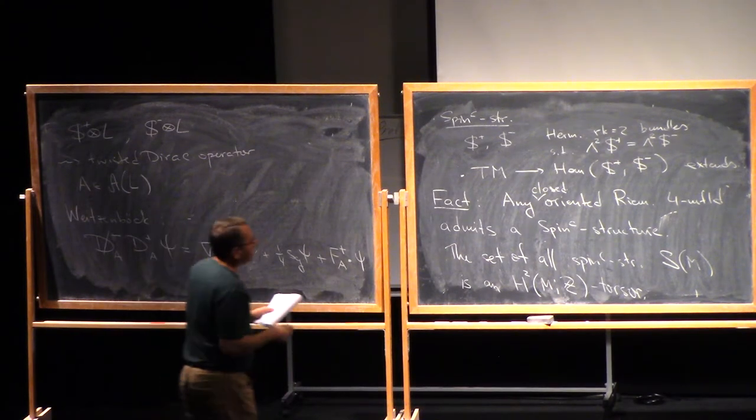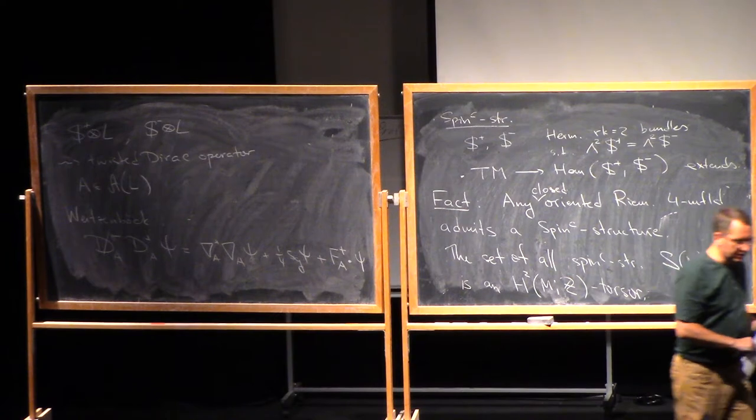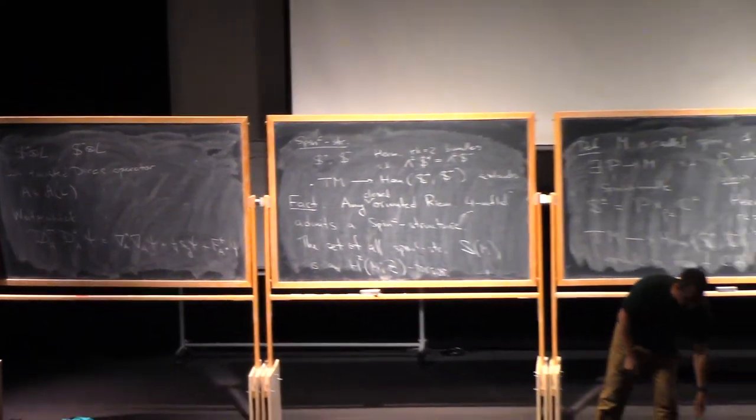And if I will apply any line bundles that I have to my disposal, I will get all spin-C structures on my manifold M. This means that I have an action of H2 on this set, and this action is, first of all, free and transitive. This is what TORSOR means.